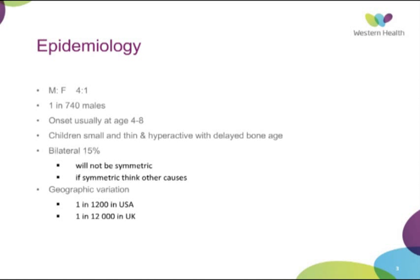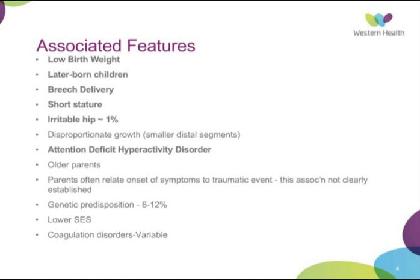There is significant geographic variation: about 1 in 1,200 in the US and 1 in 12,000 in the UK. Various disorders have been associated with it, significantly low birth weight, later-born children, breech delivery, short stature, and if children had an irritable hip prior to the onset age of four to eight years, that puts them at higher risk as well.